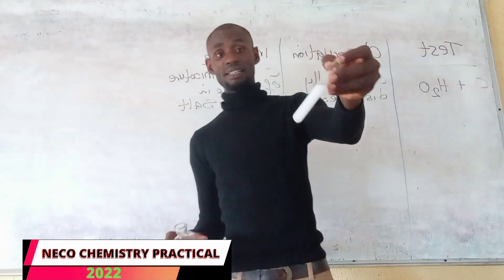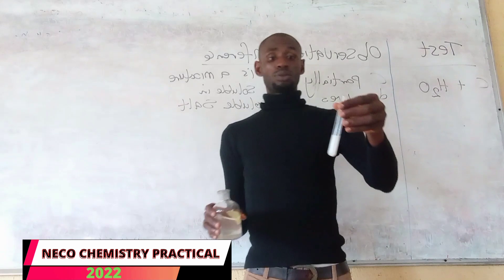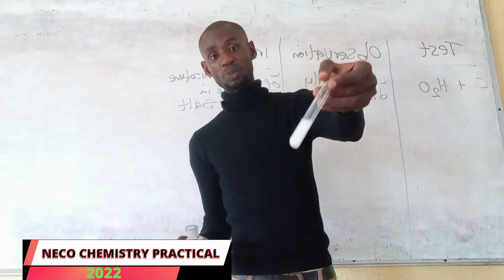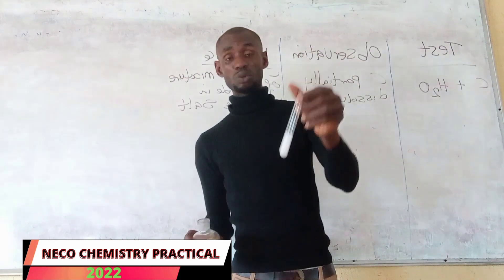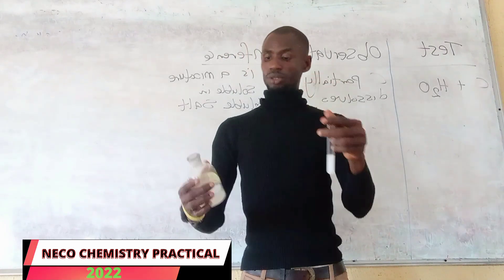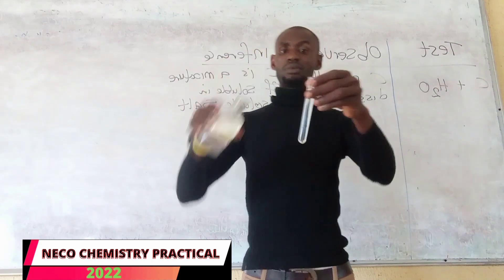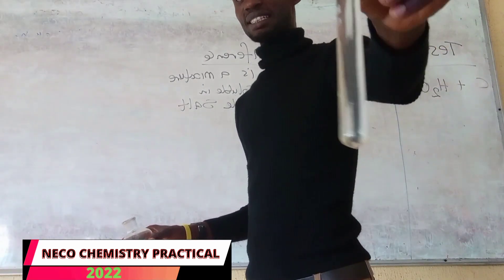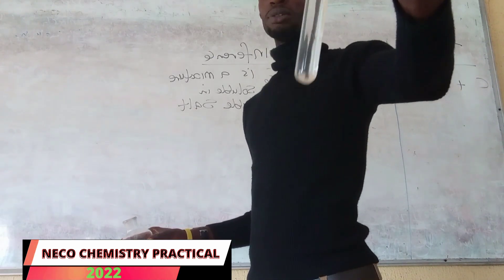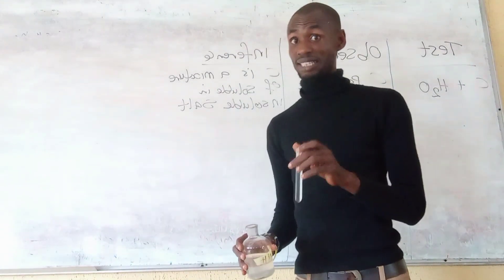You will see that the precipitate still remains on adding HNO3 — there are no visible reactions. I then add aqueous ammonia, and you will see that the precipitate dissolves completely to give a colorless solution. This confirms that we are testing for the chloride ion.